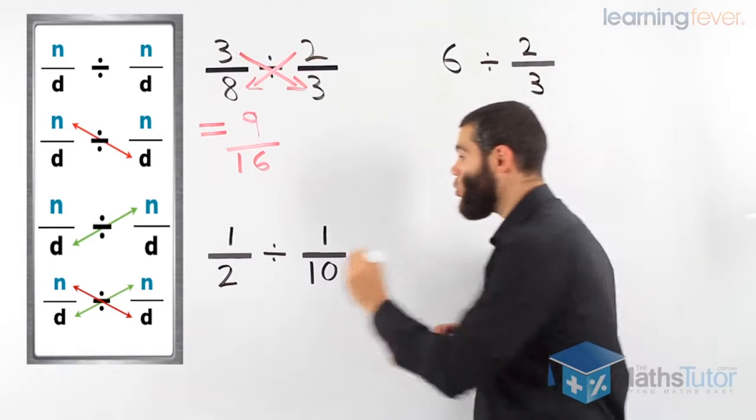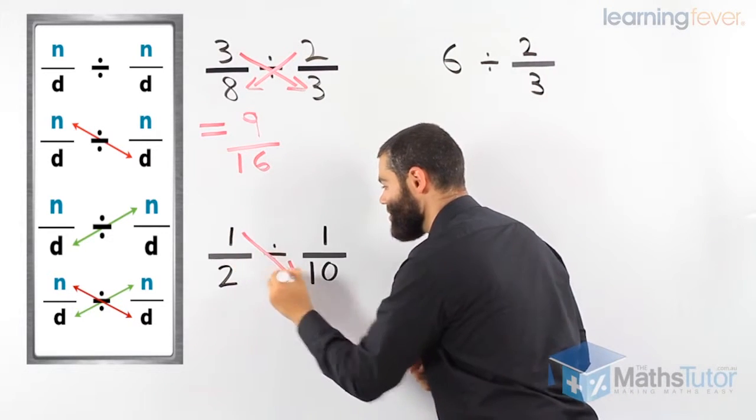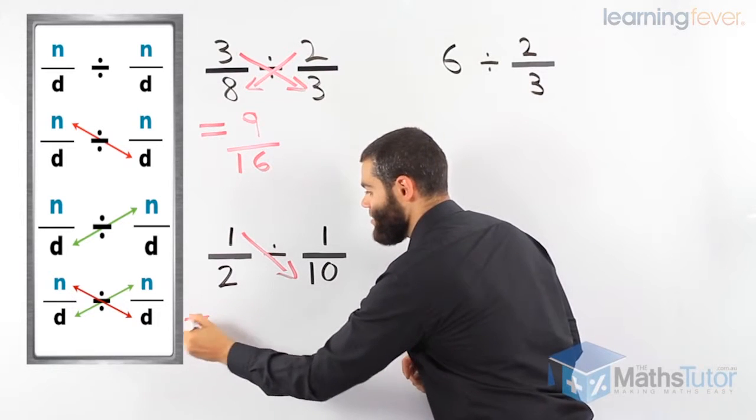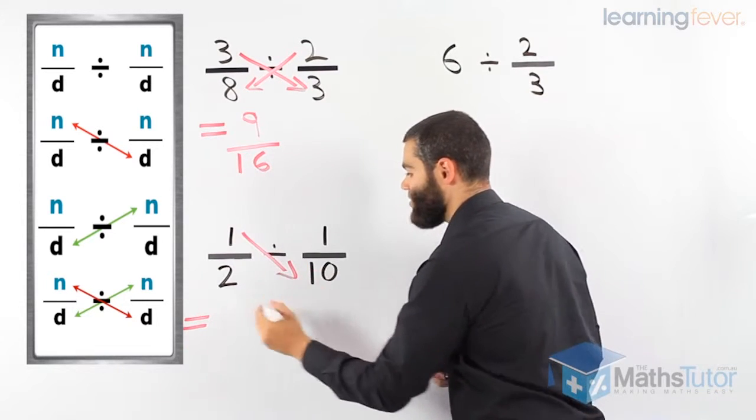Again, we start always with the first numerator, and we go down. So, 1 times 10 is 10.